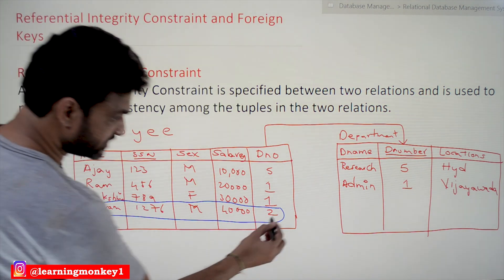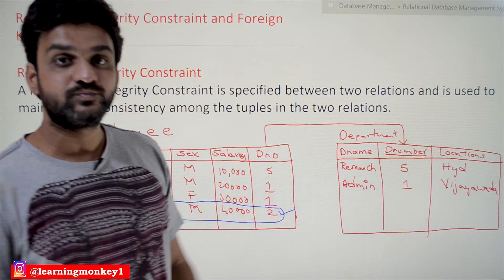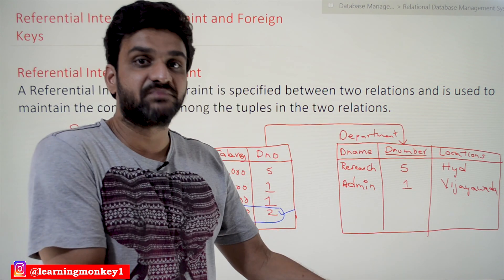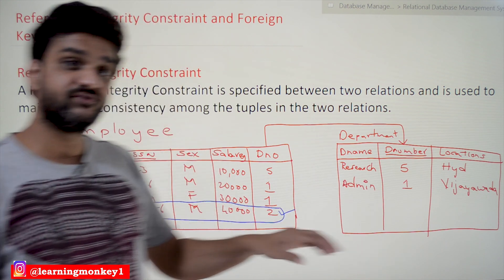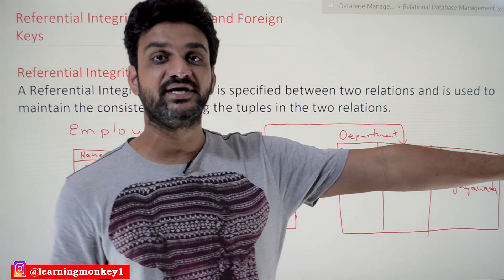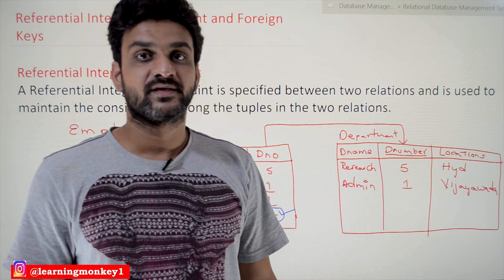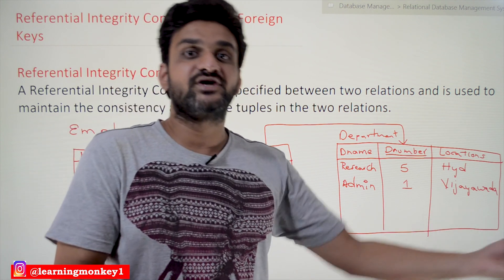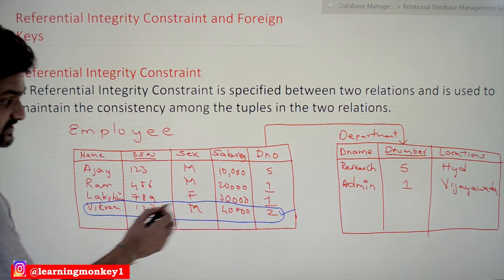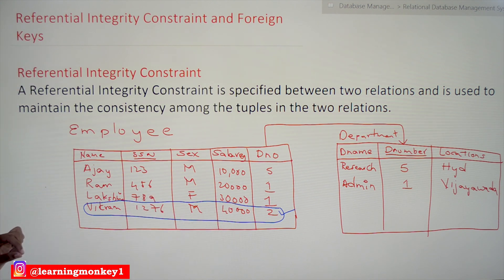Think about this value 2 — is there any department by number 2? There is no department 2, but we are trying to create employee details for someone who belongs to department number 2. Without that department existing in the company, how can an employee belong to it? That department does not exist, and we are trying to insert an employee into it — so is this kind of insertion allowed? No, it is not allowed.